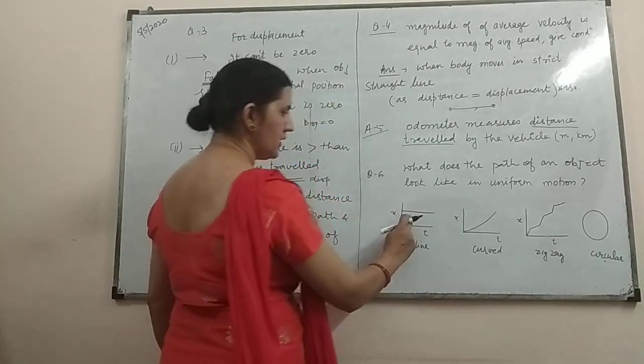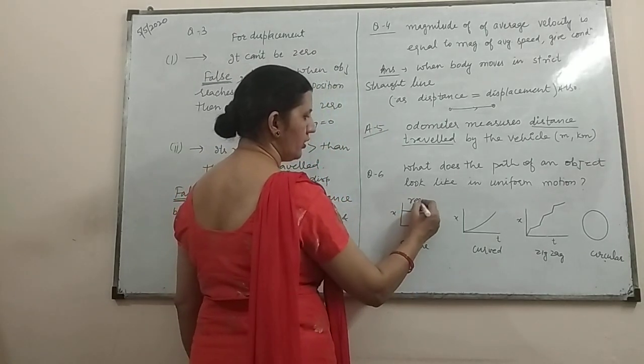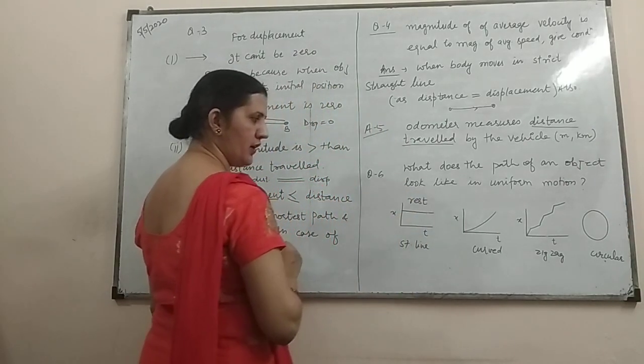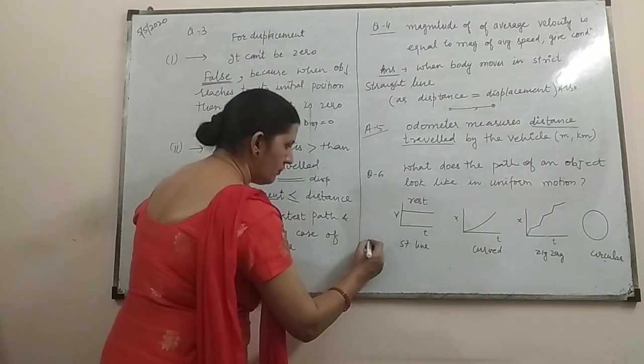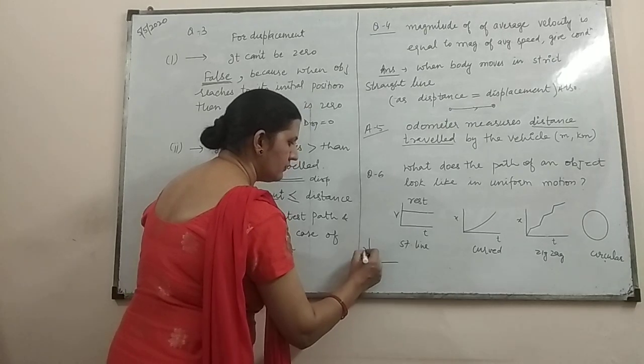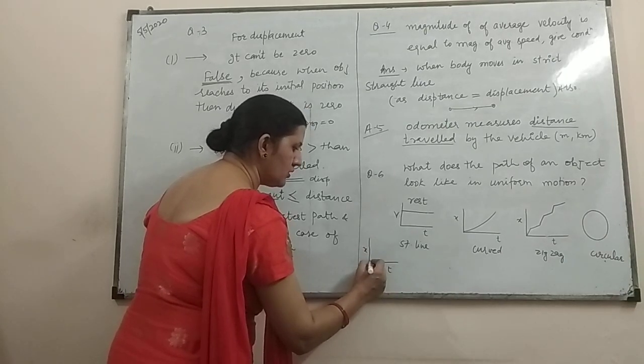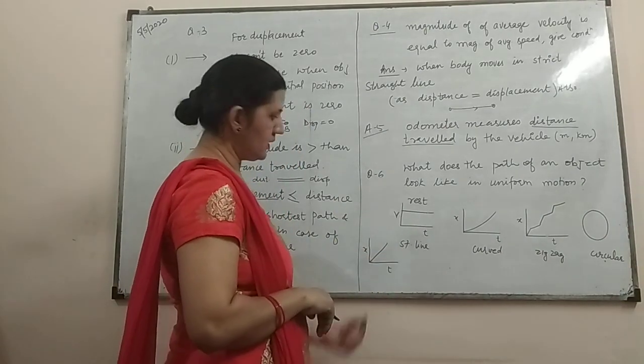This graph is only for the situation of rest and it is only when the graph is v-t graph. But if it is x-t graph, the graph is inclined to the time axis. Again, this is a straight line.